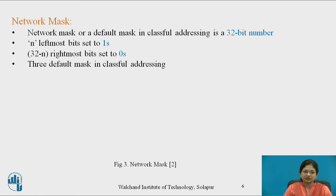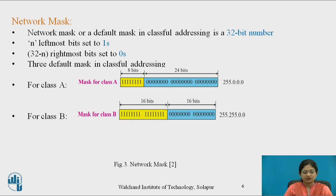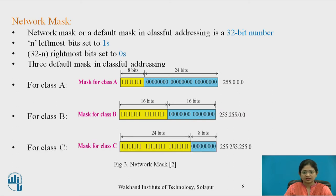Now let's see the concept of network mask, also known as default mask. The default mask in classful addressing is a 32-bit number with n leftmost bits set to 1s and 32-minus-n rightmost bits set to 0s. There are 3 default masks: for Class A the mask is 255.0.0.0, for Class B the default mask is 255.255.0.0, and for Class C the default mask is 255.255.255.0.